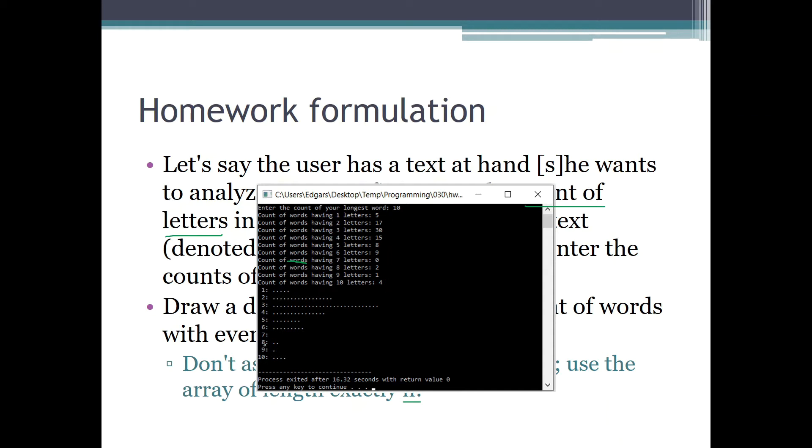The user enters all those numbers and then we draw a dot diagram something like that. With one letter there were five words, so we just print five dots. With two letters, 17 dots, and so on. So this is our program's printout. Now let's try to do it and then come back to see the solution.